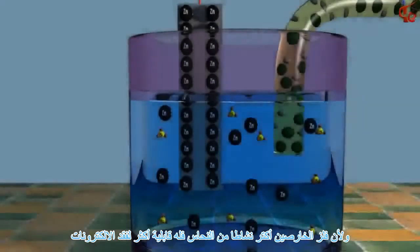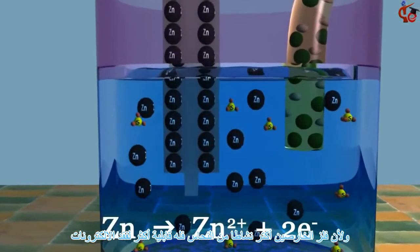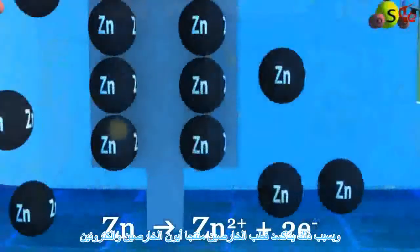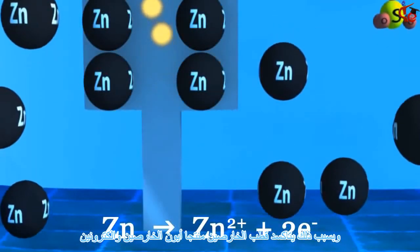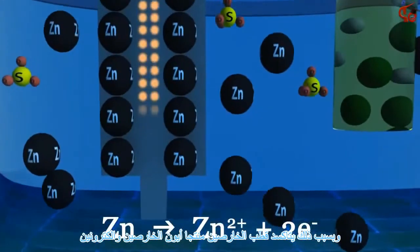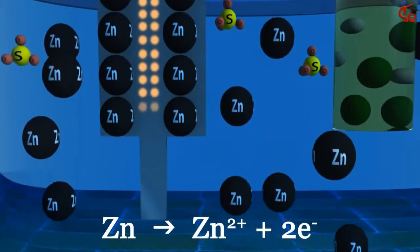Because zinc is a more active metal than copper, it is more likely to lose electrons. For this reason, the zinc bar is oxidized, producing a zinc ion and two electrons per zinc atom.